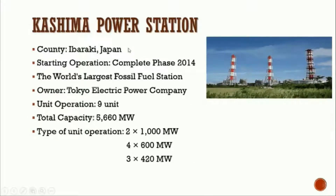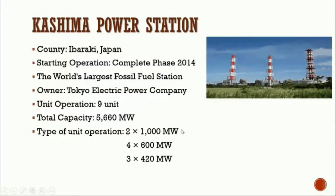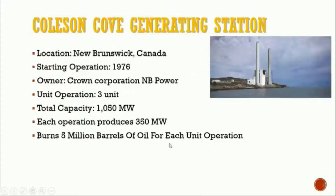Kashima Power Station is located in Ibaraki, Japan, with operations completed in 2014. It is the world's largest fossil fuel power plant, owned by Tokyo Electric Company. It has 9 units of operation with a total capacity of 5,660 MW, with three types of unit operation: 1,000 MW, 600 MW, and 420 MW units.